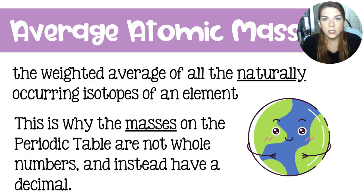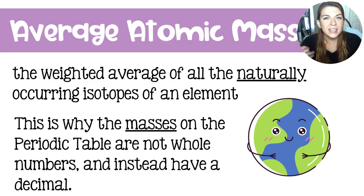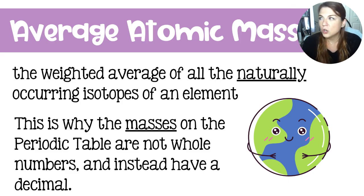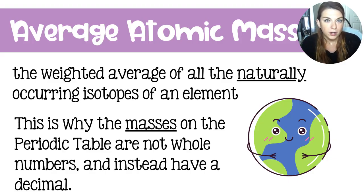This is why none of our masses on the periodic table come out to a whole number — they're always going to have a decimal. It represents the average. Think of it like your chemistry grade in class: we take your tests, your labs, your homework, and average them all together to give you a score that goes on your report card. Then all your report card scores are probably averaged again to give you a GPA.